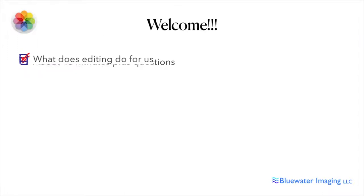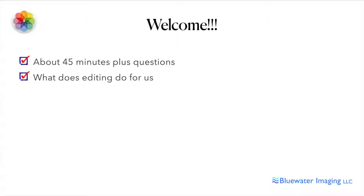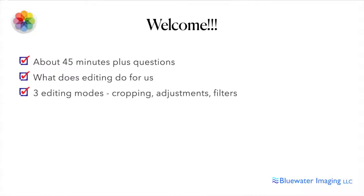First we're going to talk a little bit about what editing does for us. What is editing? Not everybody really understands what that means, but they know that they can do stuff with their photos and it's not just random stuff. There are good reasons for why we edit. In Photos on both the iPhone and the Mac, there are basically three core editing modes: cropping the photos, making adjustments and color adjustments, and using filters, which is kind of a hybrid compilation of adjustments.